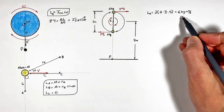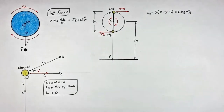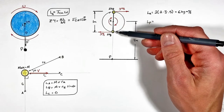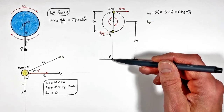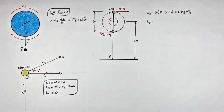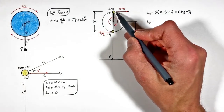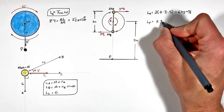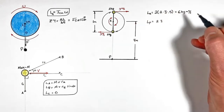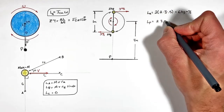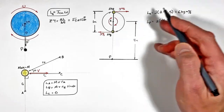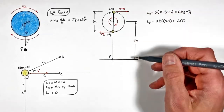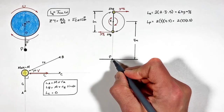That leaves us with an angular momentum of six kilogram meters squared per second. Now, looking at things relative to point P, we have two different masses and they're not equidistant away from this point P, so we're going to have to look at the masses individually. Looking at the angular momentum of the top mass first, we're going to have this two-kilogram mass moving at three meters per second at a radius of four and a half meters away from this point P. Plus, we're going to have this two-kilogram mass moving at three meters per second at three and a half meters away from this point P.